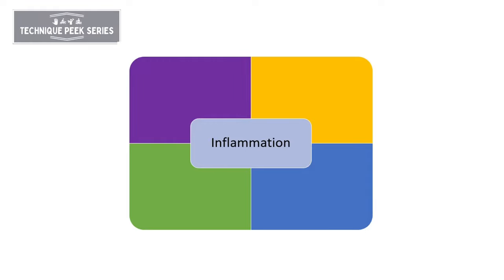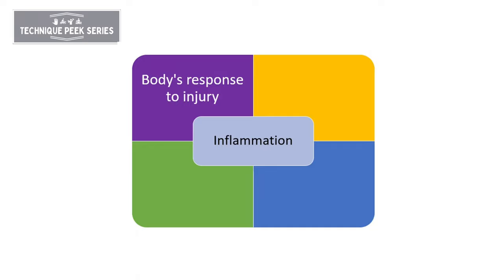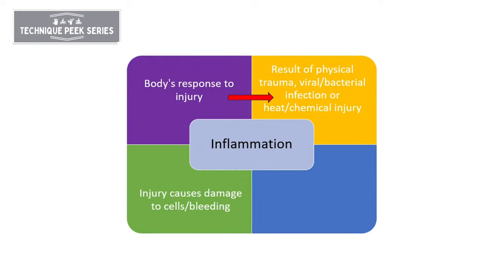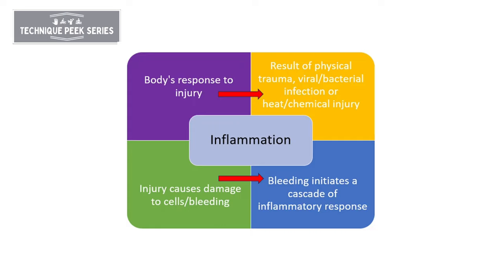Today we're going to talk about the stages of inflammation. Inflammation is the body's natural response to an injury. The injury can be a result of a physical trauma, a bacterial or viral infection, or a heat or chemical injury. Injury causes damage to cells and bleeding, and bleeding initiates a cascade of inflammatory response in the body.